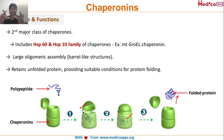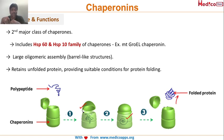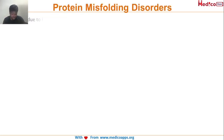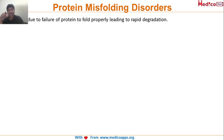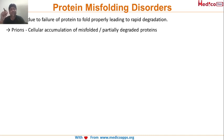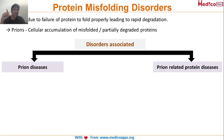To summarize: protein folding is essentially the formation of correct hydrogen bonds to produce the exact three-dimensional structure that allows a polypeptide to function. The key molecules are chaperones, with chaperonins being particularly important as the second class. Now, protein misfolding disorders are caused by the failure of proteins to fold properly, leading to rapid degradation. Prions involve cellular accumulation of misfolded or partially degraded proteins. Misfolding disorders are divided into prion diseases and prion-related diseases.